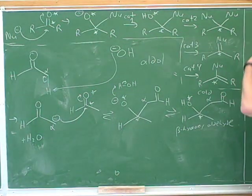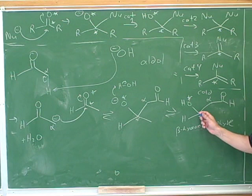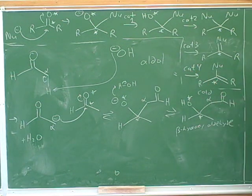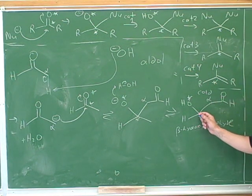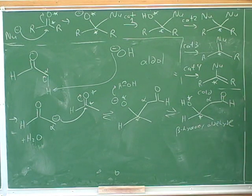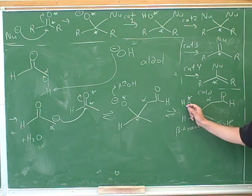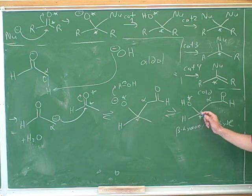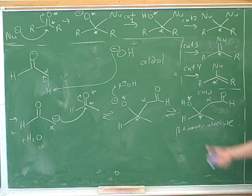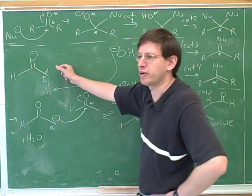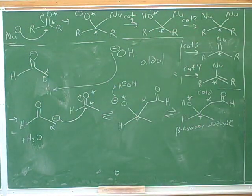Going back to the retroaldol condensation, what would we have to do to this to make it go backwards? And the answer is just add heat. We don't even have to add the carbonyl oxygen, because the carbonyl oxygen is still here. All you have to do is just add heat to this. So if you see a beta hydroxy aldehyde and heat, you expect that to do the retroaldol condensation.